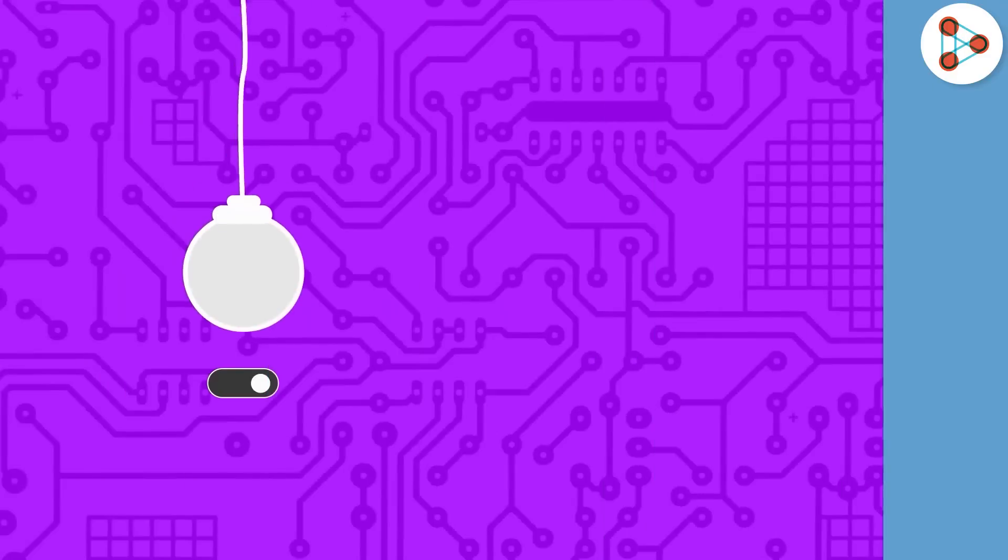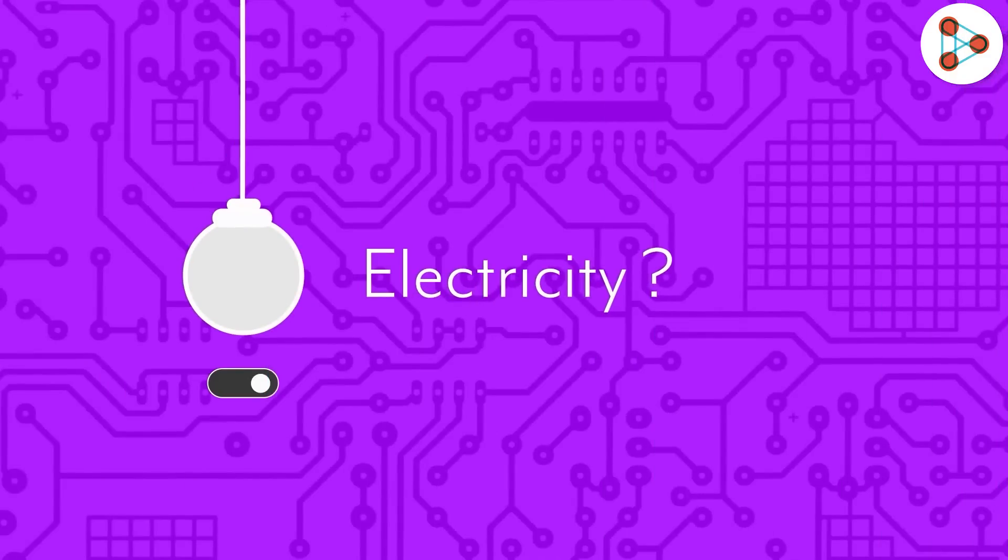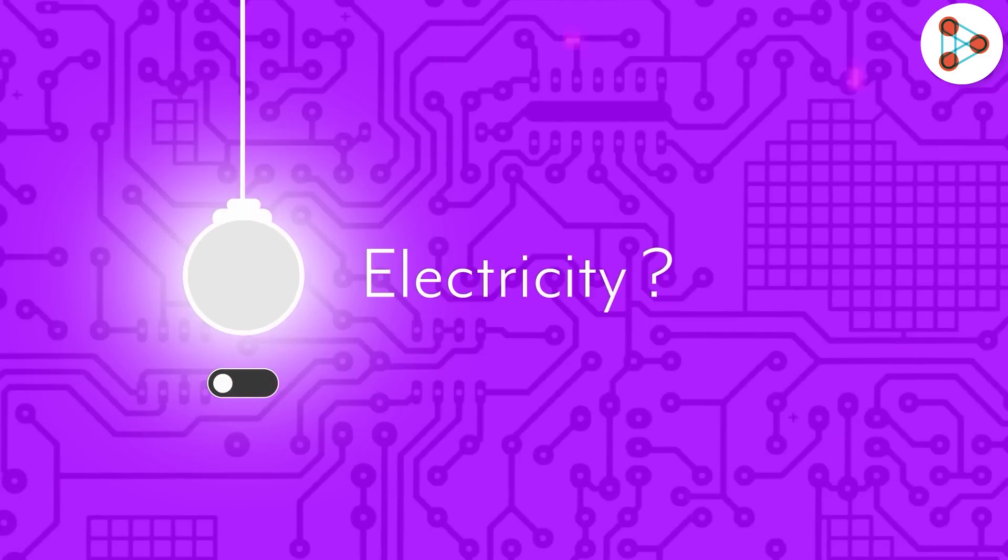But the important question is, what exactly is electricity? How does it flow in an electric circuit? Why does the bulb light up when the switch is on?